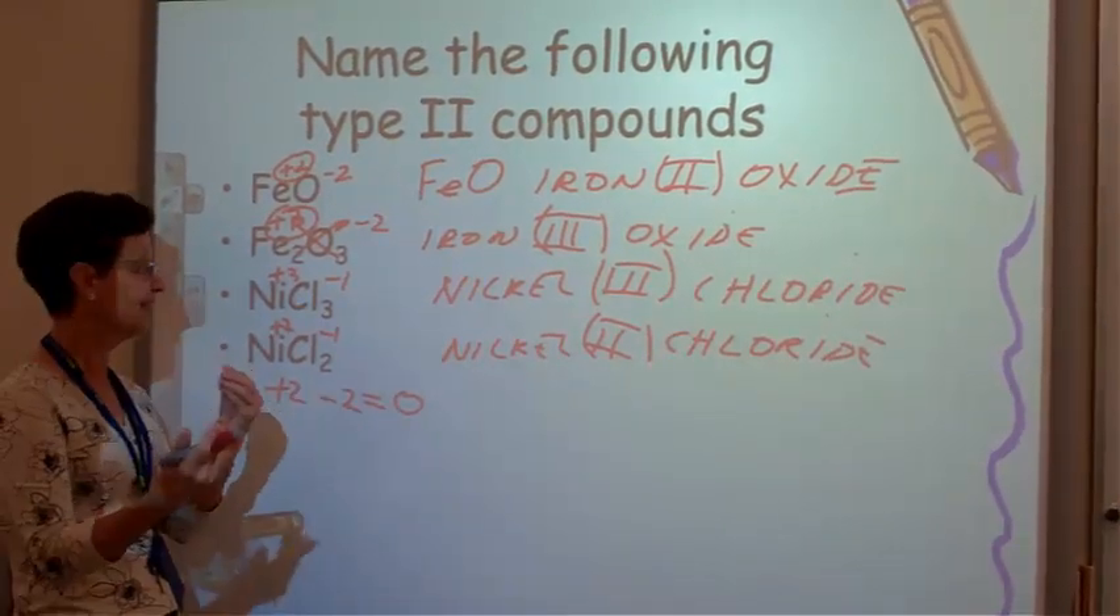Remember this. All compounds must equal to 0. They must be neutral. The number of electrons lost and gained makes it that.